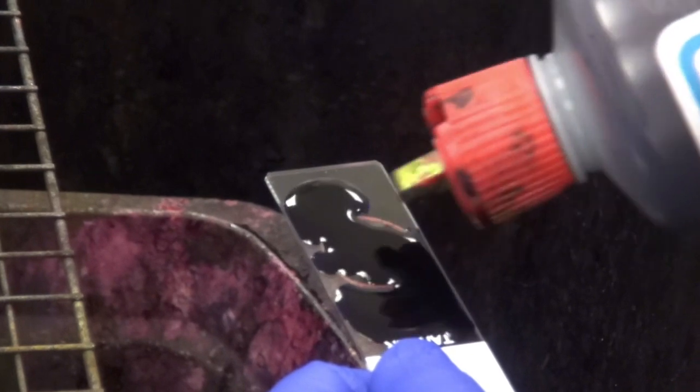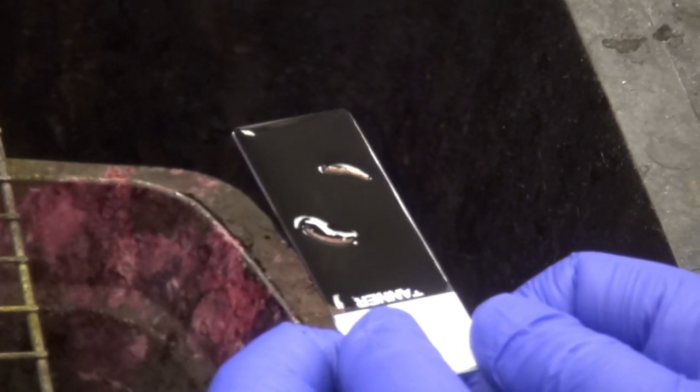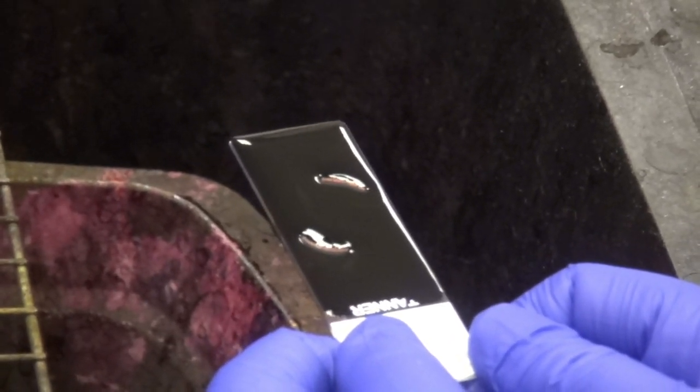Holding the slide over the waste bucket in the middle of the bench, flood the slide with our first reagent, the crystal violet. This is the primary stain and will stain the bacteria a deep purple.